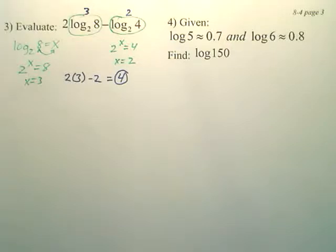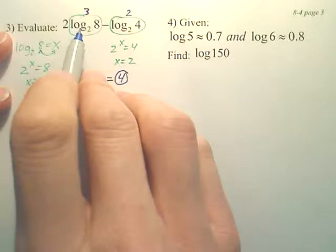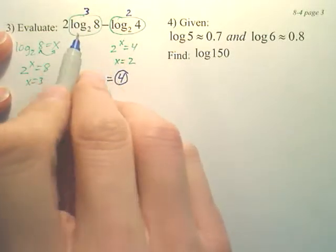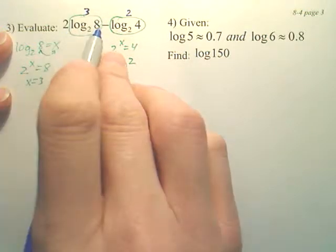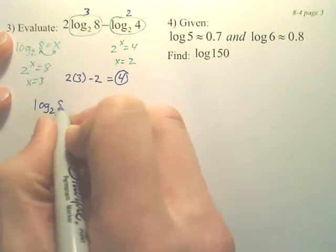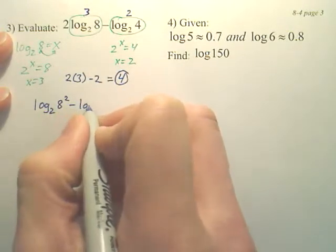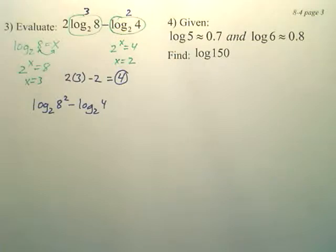Now, there's another way of looking at it, and I want you to understand this. Let's use convention properties. Meaning, if I want to condense this, can I take that 2 and bring it up here? And make that log base 2, 8 squared minus log base 2, 4. We can take the 2 and bring it up.